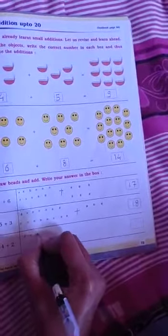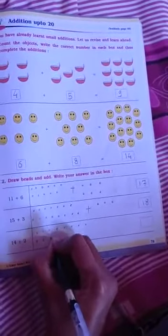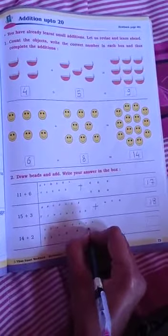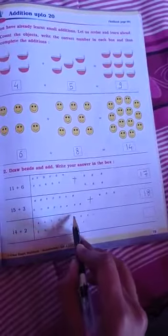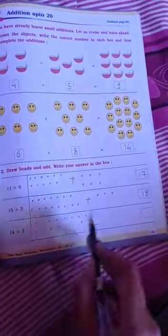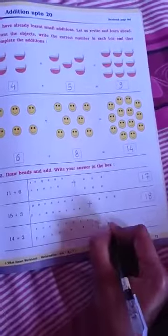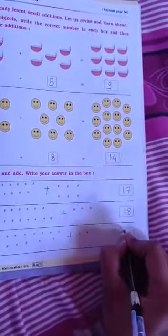1, 2, 3, 4, 5, 6, 7, 8, 9, 10, 11, 12, 13, 14. Plus 2. So, 14 plus 2, 14, 15, 16. So, write here 16.